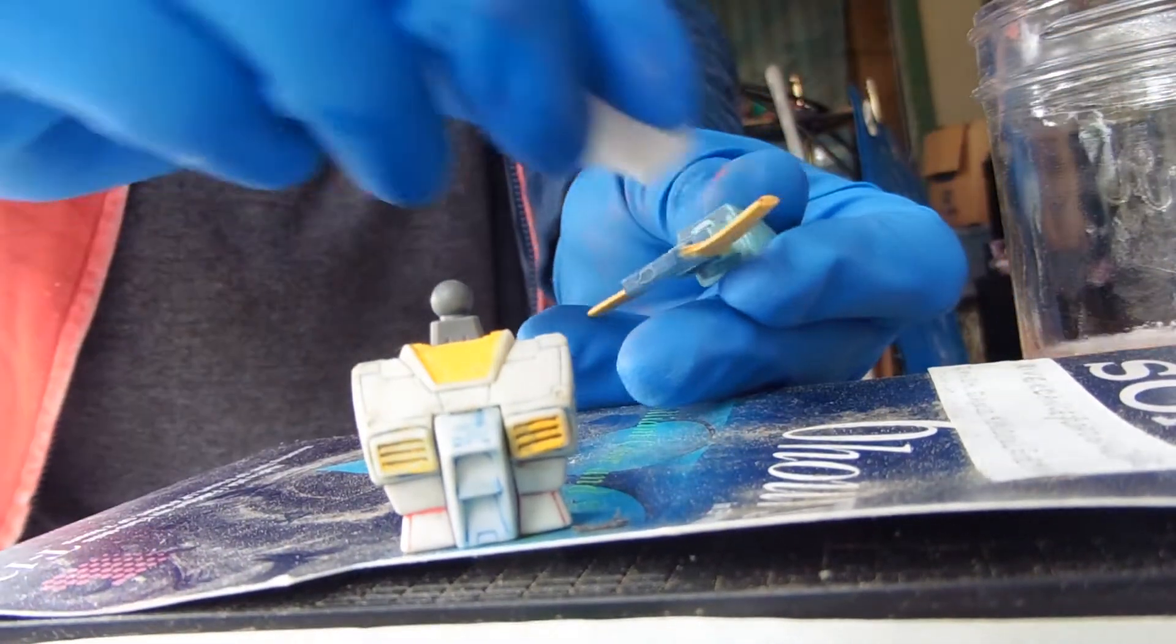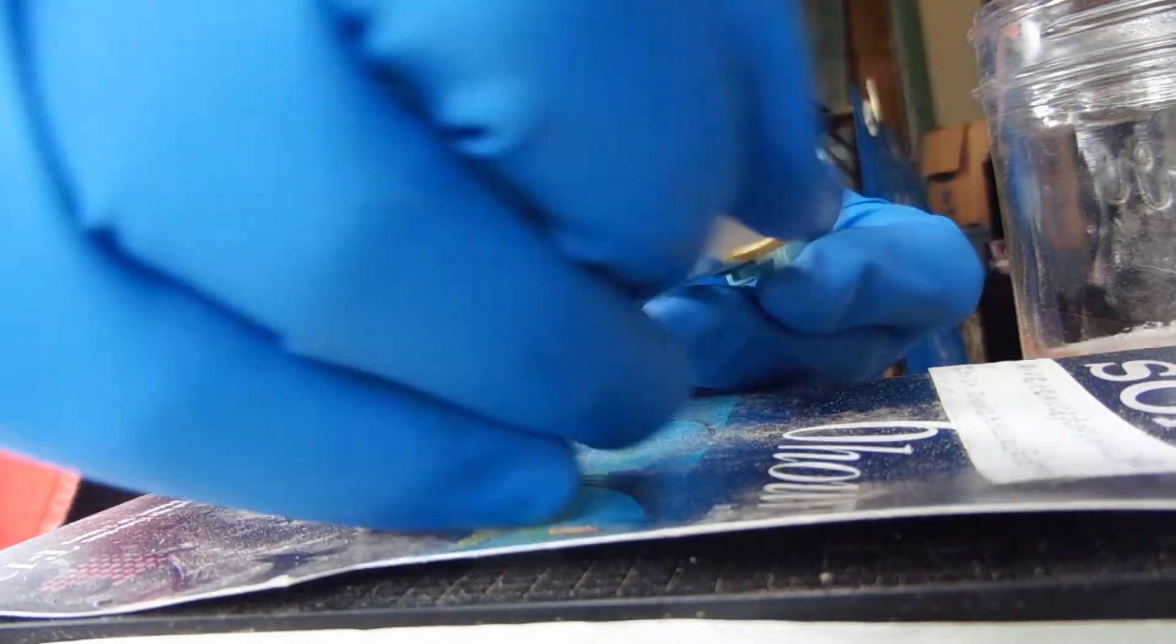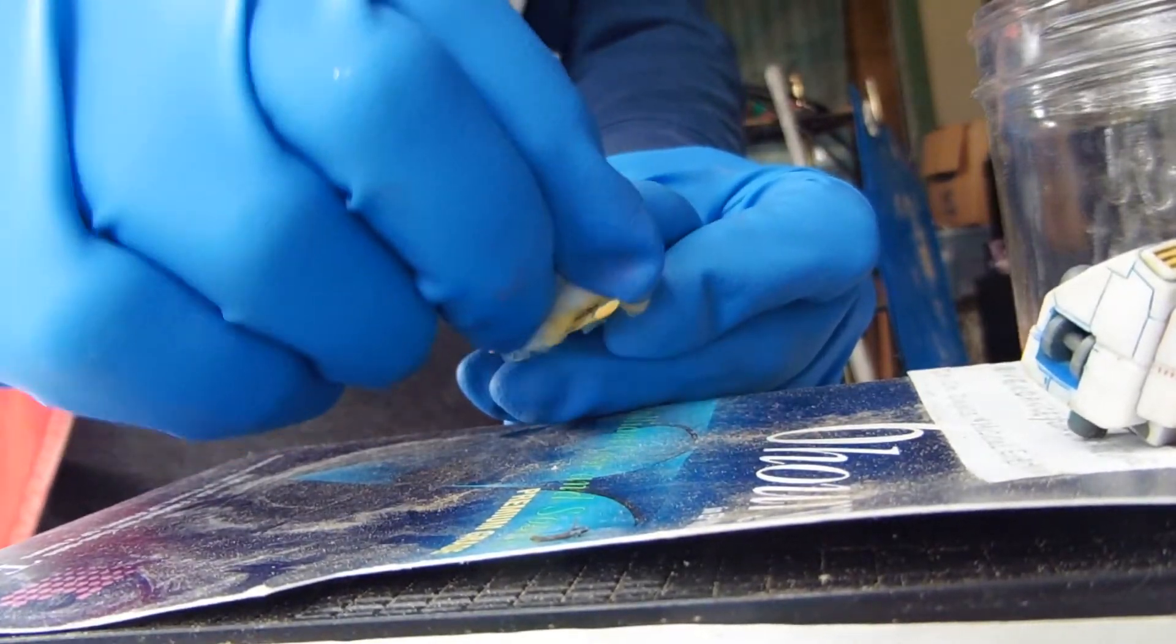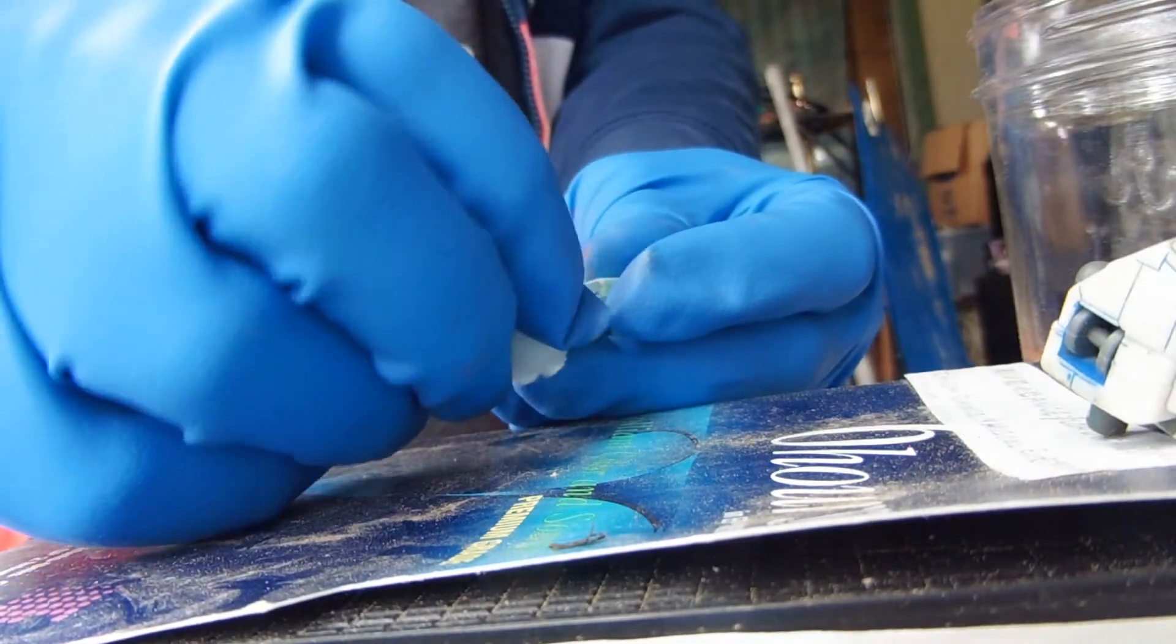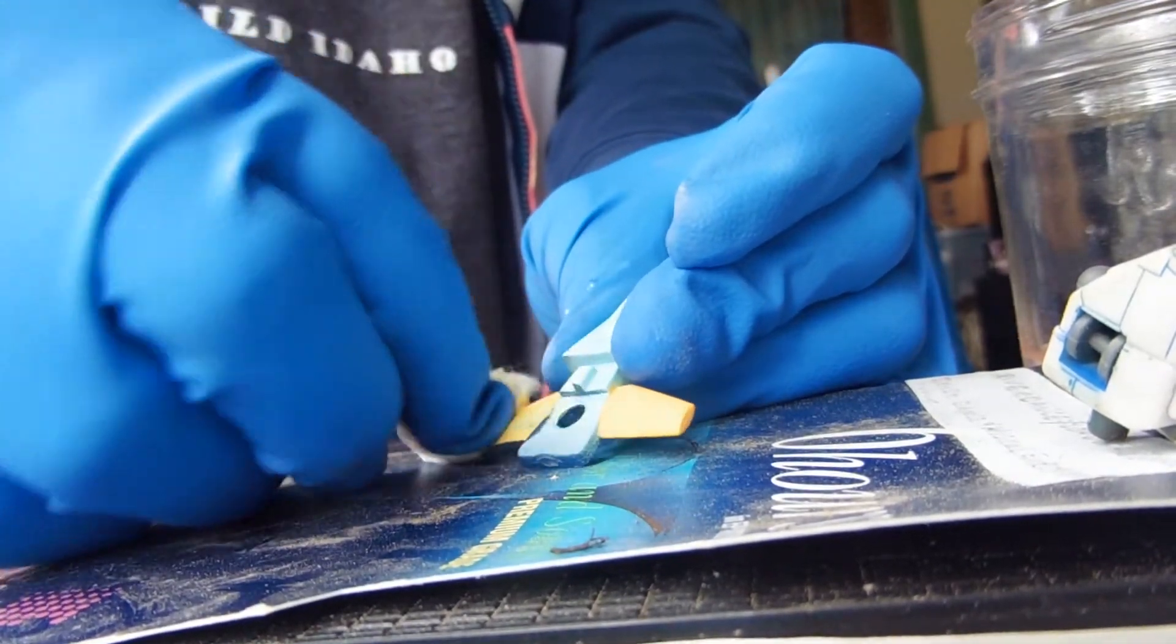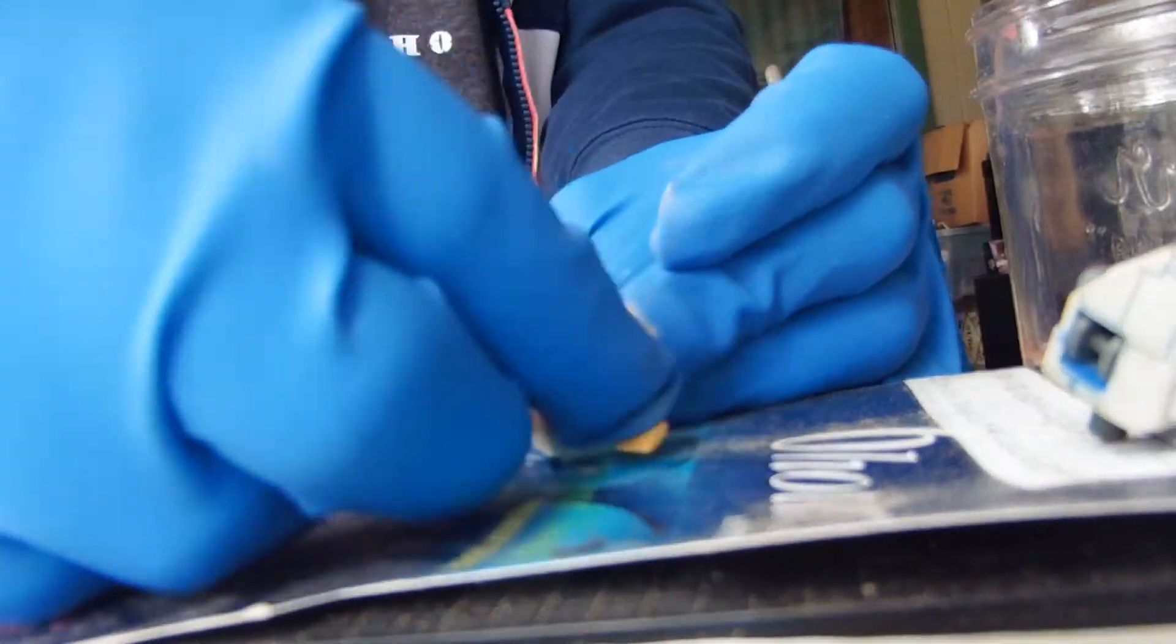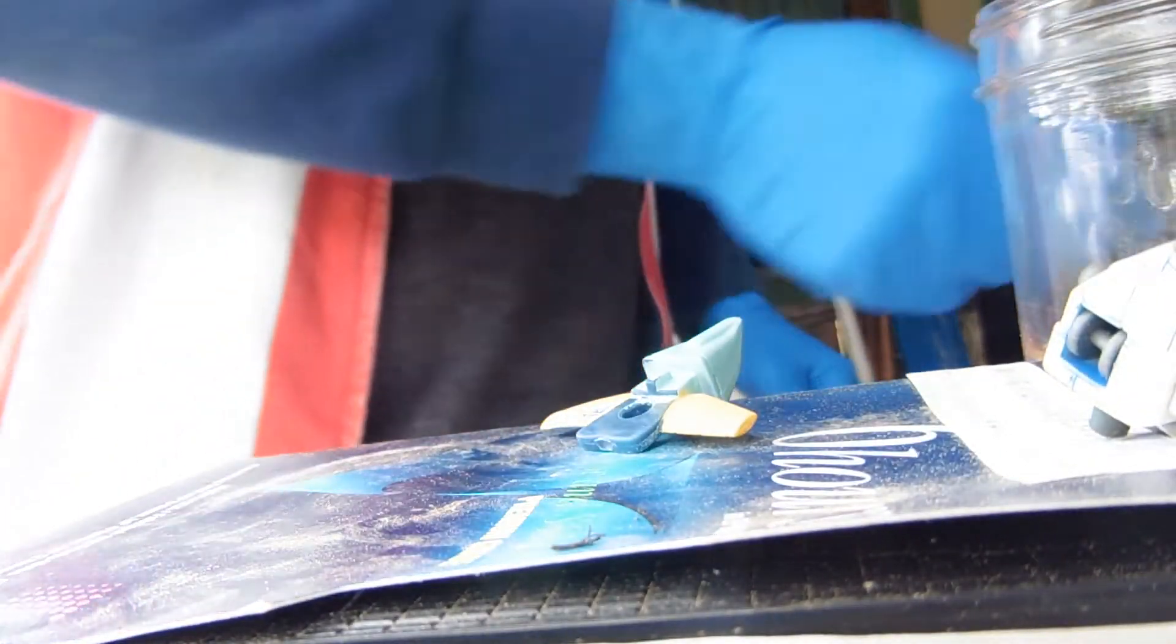And this acetone will take this factory paint right off. Now it's useful to know what you should be expecting underneath your plastic. And sometimes you can tell by looking around and figuring out what parts aren't painted or whatnot, but sometimes the whole thing's painted. You won't know until you are done.